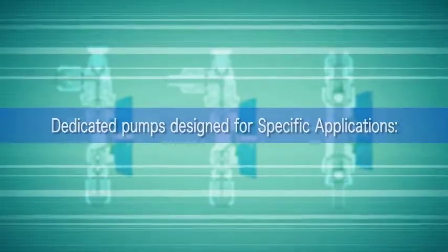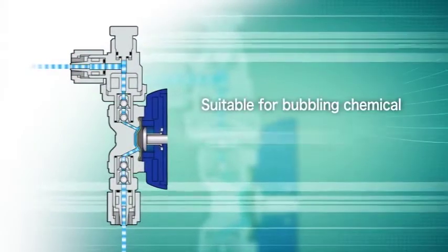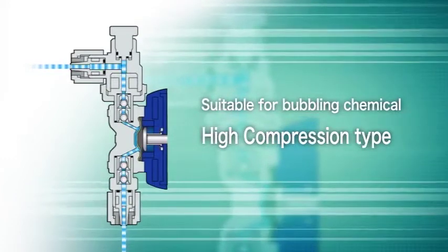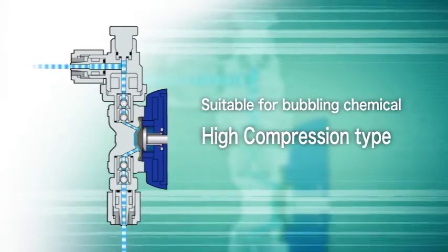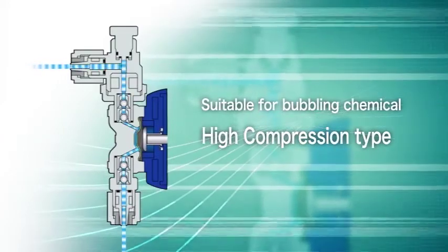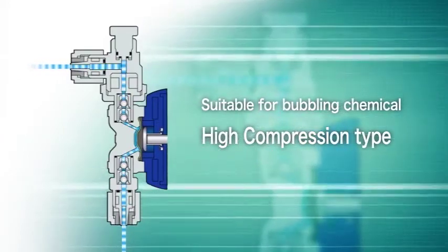The high compression pumps were designed for chemicals that outgas, such as sodium hypochlorite. Increasing volume per stroke and decreasing dead volume increases the compression ratio, making a pump design excellent for pumping chemicals that contain a lot of gas.